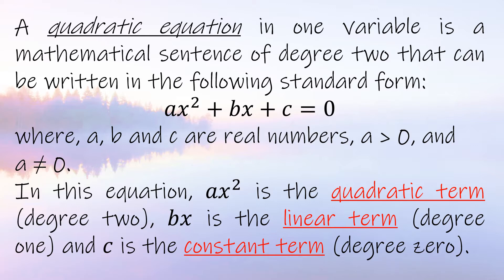The term bx is the linear term, in which the variable must have a degree or exponent of one. And c is the constant term with a degree of zero — the term with no variable x.